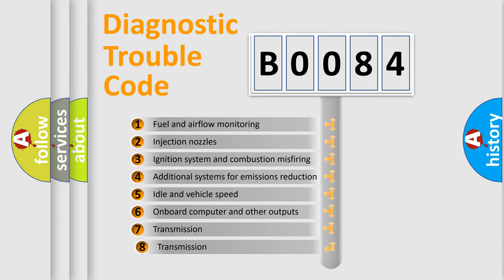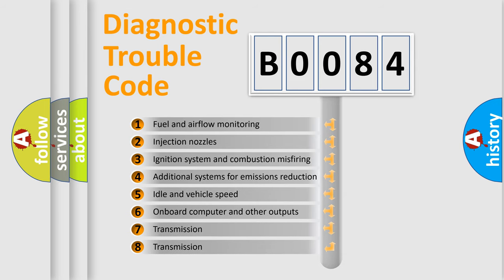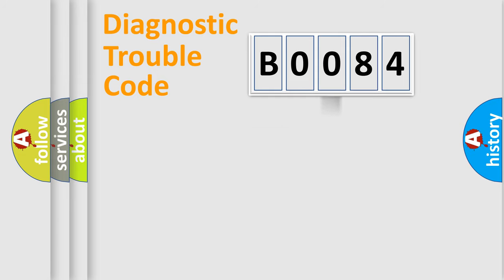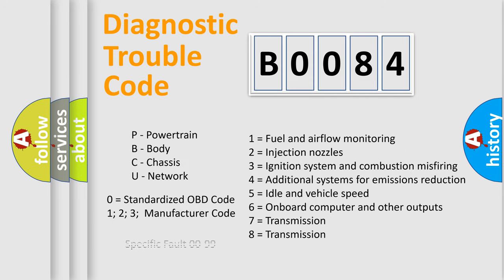The third character specifies a subset of errors. The distribution shown is valid only for the standardized DTC code. Only the last two characters define the specific fault of the group. Let's not forget that such a division is valid only if the second character code is expressed by the number zero.